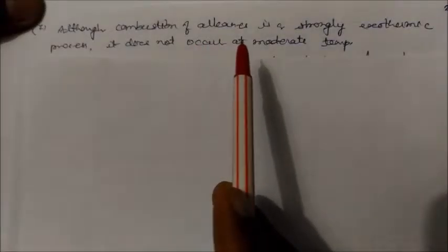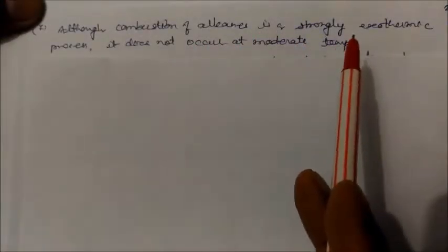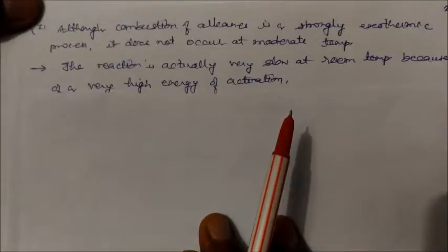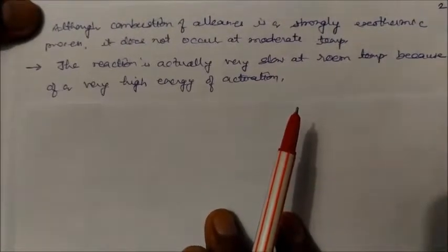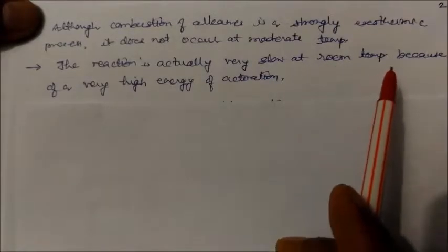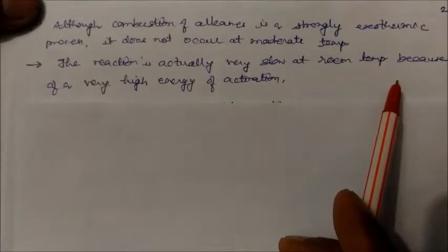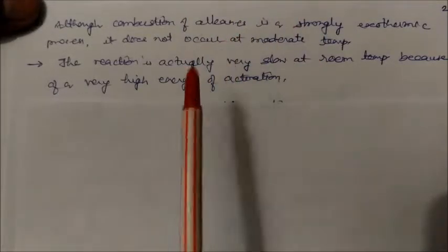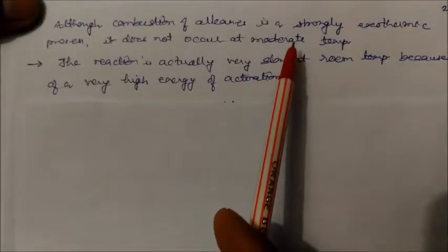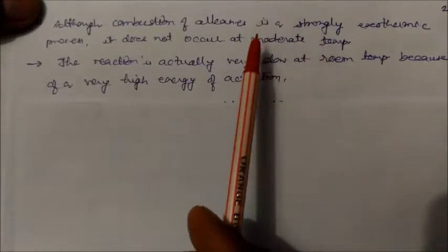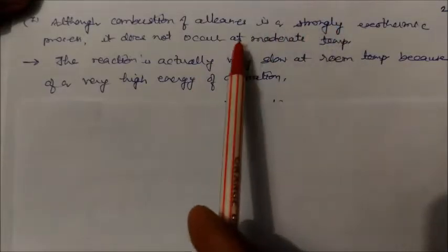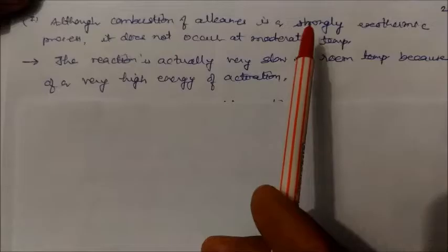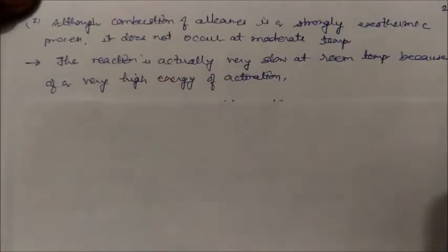Although combustion of alkanes is a strongly exothermic process, it does not occur at moderate temperature. The reason is that the reaction is very slow at room temperature because the activation energy of alkanes is very high. That is why combustion only occurs at high temperature and does not occur at moderate temperature.